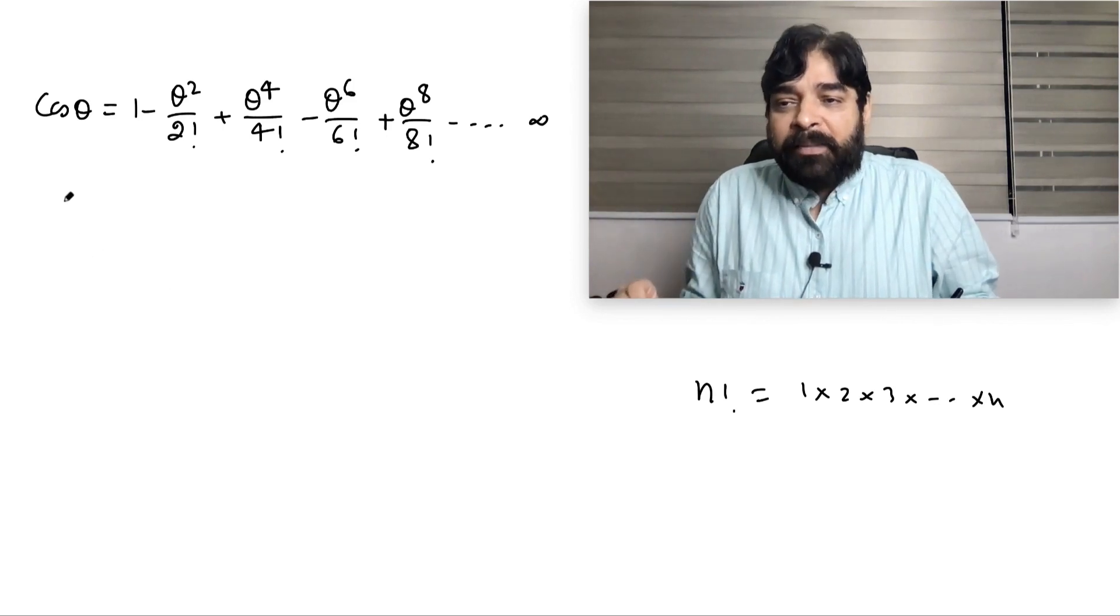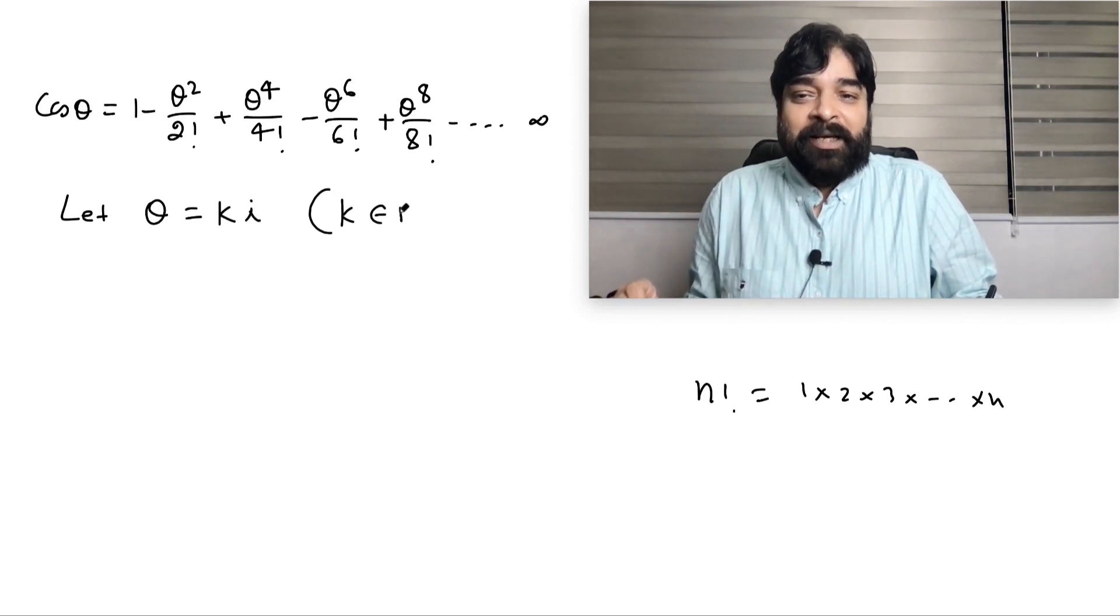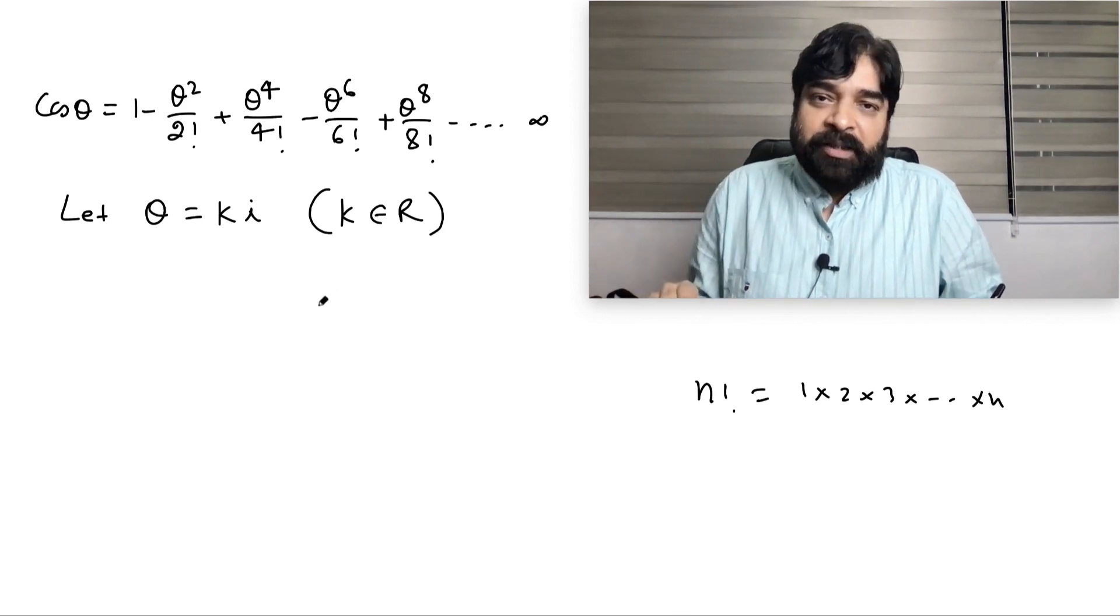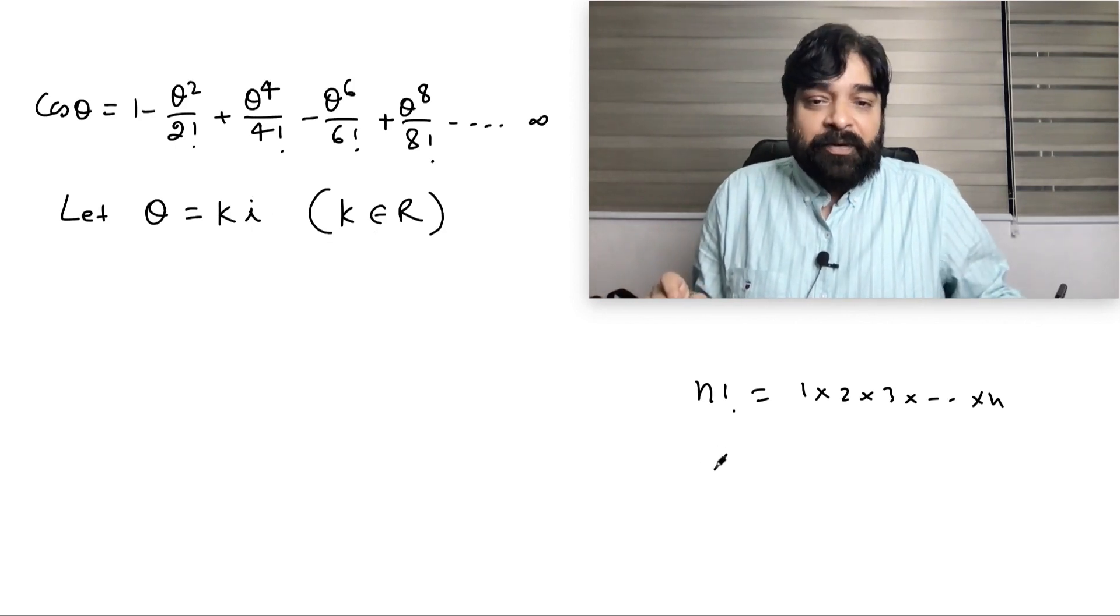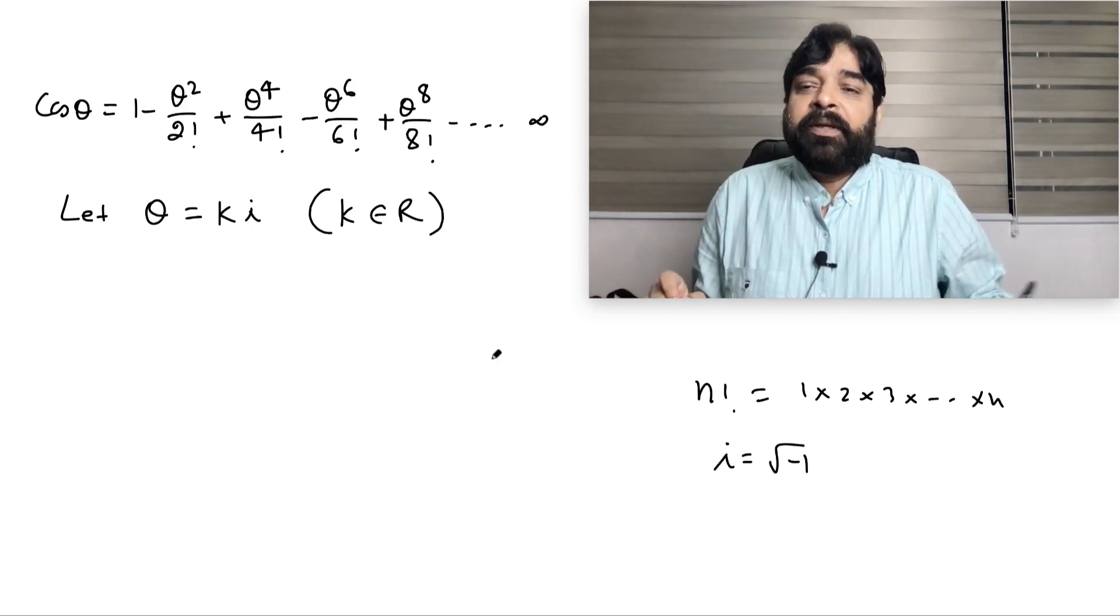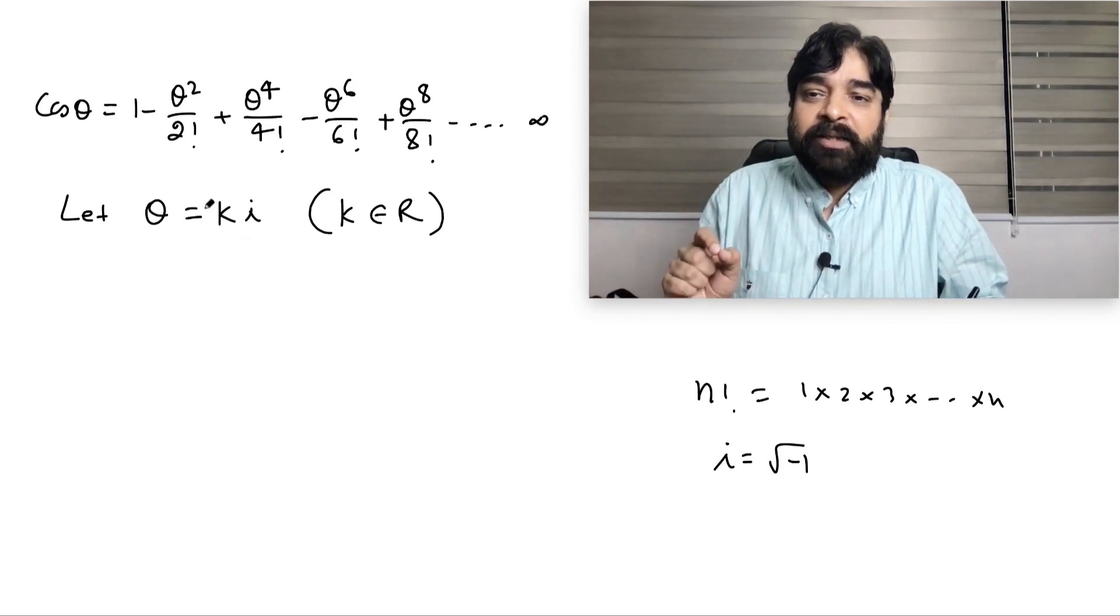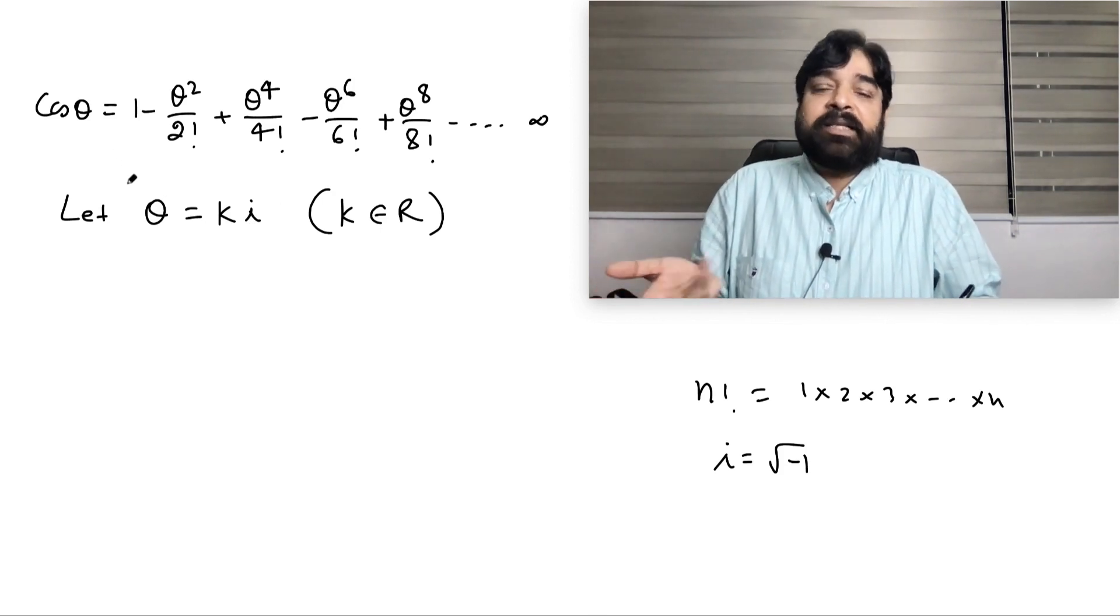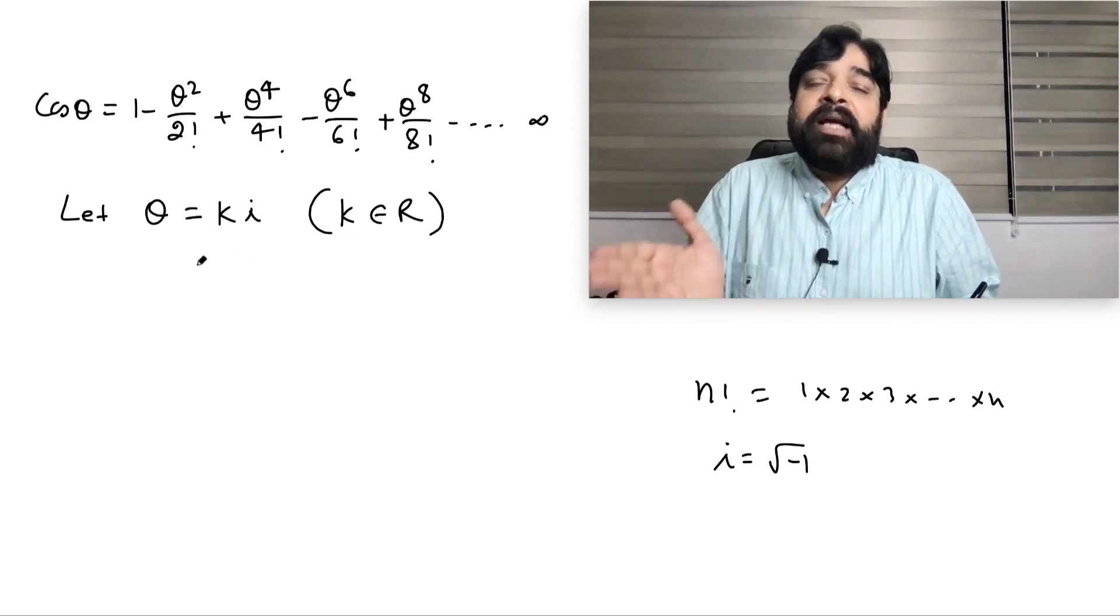Now imagine I am assuming: let θ = ki, where k is pure real number. Again I am saying the condition which is written in the bracket is very important: k belongs to real number. Why? Because if k is real and i is root of minus 1, then ki is always pure imaginary number. This is called the pure imaginary number. If θ is real, cos θ will be less than or equal to 1, but if θ is not real, I am taking it as ki, pure imaginary.